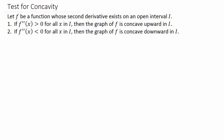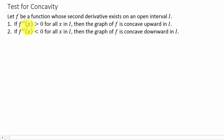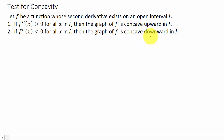To test for concavity: f is a function whose second derivative exists on an open interval I. If f double prime of x is greater than zero for all x in that interval, then the graph of f is concave upward. If f double prime of x is less than zero for all x in interval I, then the graph of f is concave downward.